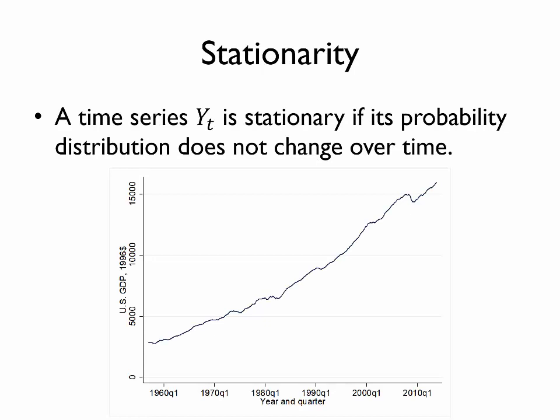First let's recall the definition of stationarity which was introduced in a video on time series assumptions. We say that a time series y is stationary if its probability distribution does not change over time. If you apply this definition to the graph shown on the bottom of the screen of U.S. GDP versus time you might hypothesize that GDP is not a stationary time series and you would be correct.